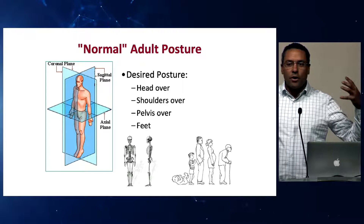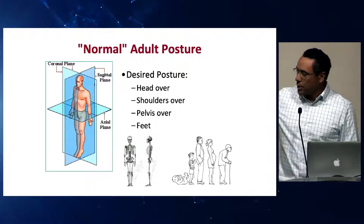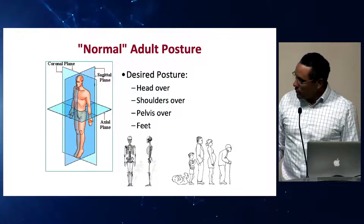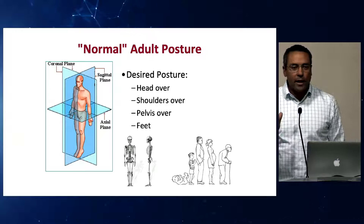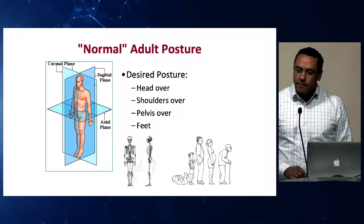As I explain to patients all the time in clinic, we are supposed to live life with our head centered over our shoulders, centered over our pelvis, centered over our feet. That has to be weighed against something that Dr. Chapman already hinted at earlier, which is that life is a kyphosing event. We actually begin life with exaggerated kyphosis, and we end life with exaggerated kyphosis. So we have to be a little bit careful about how to apply the exact same parameters and thoughts to a 40-year-old as to an 80-year-old.